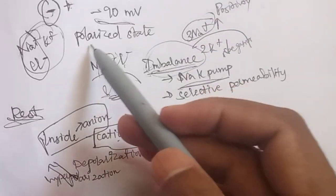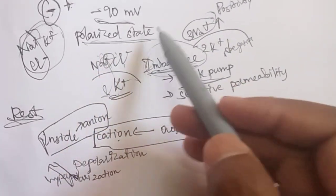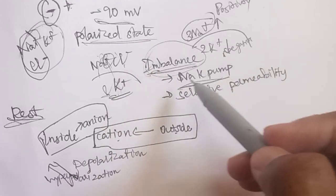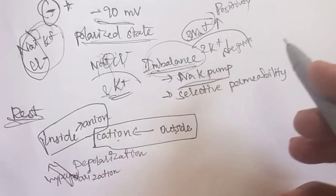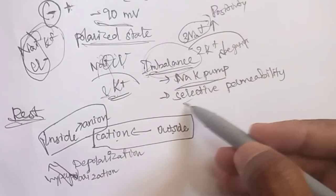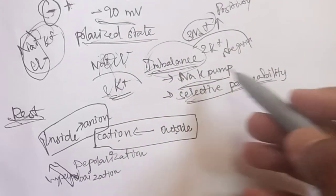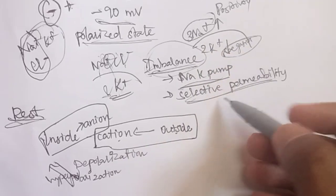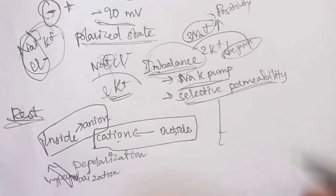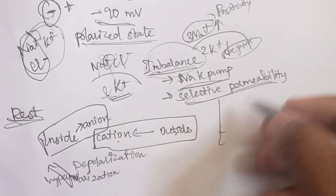The polarized state is the imbalance. If you move the sodium-potassium pump along with the selective permeability of the cell membrane, this maintains the negative charge inside the cell.